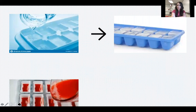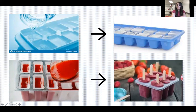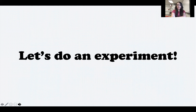Here's another example - this is how popsicles are made. You take your juice, pour it into your popsicle maker, put it in the freezer for a few hours to remove all the heat, and then you have popsicles to enjoy, which are a solid. So we have liquids, we're removing the heat, and they become solids.